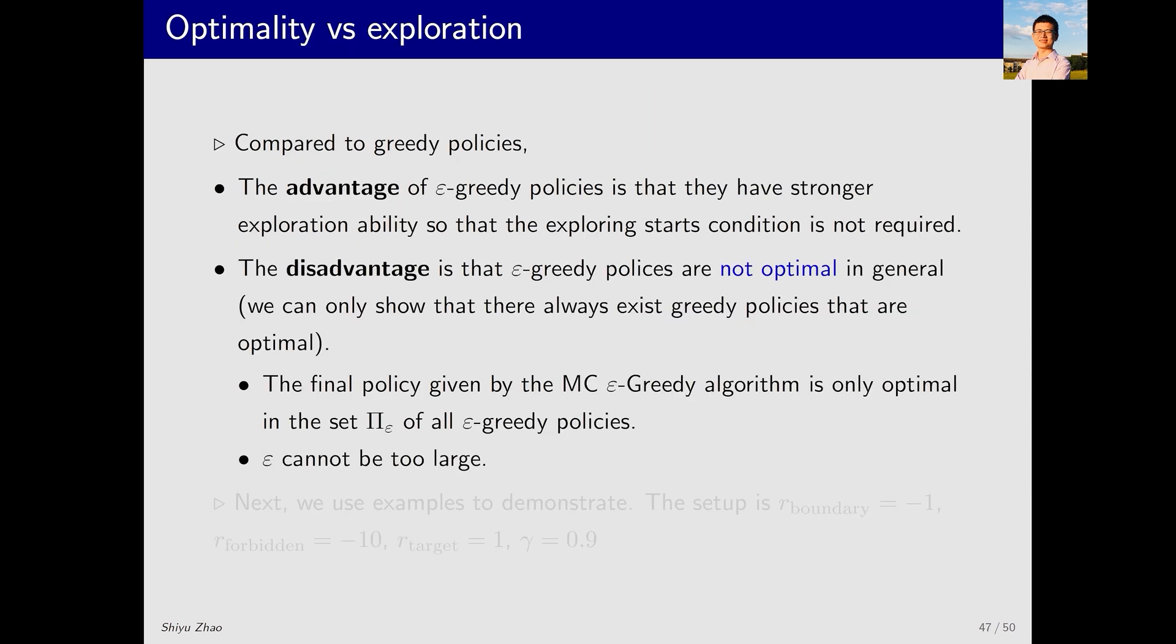As discussed earlier, its advantage lies in strong exploration ability, yet its disadvantage is the sacrifice of optimality. In practice, we can balance this by setting a relatively small epsilon value. As epsilon approaches zero, an epsilon greedy policy becomes closer to a greedy policy. Thus, the optimal epsilon greedy policy found using this algorithm is close to the optimal greedy policy.